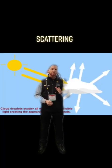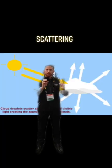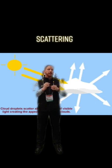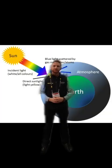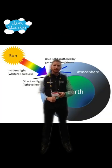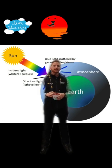Scattering is when light bounces off of particles in the air in a bunch of different directions, and off objects as well. Scattering is what makes the sky blue, the sun sets red, and the clouds white.